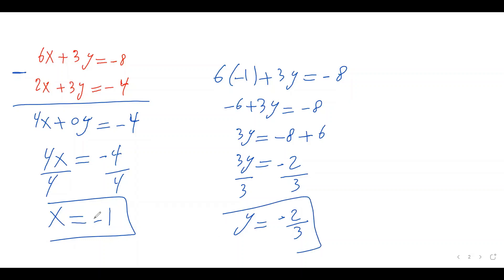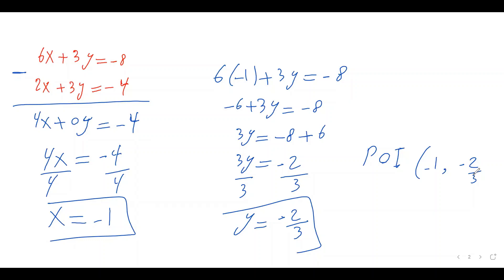So negative 1 is the x-coordinate and negative 2 over 3 is the y-coordinate of the point of intersection. So the point of intersection is negative 1 comma negative 2 over 3. That's how we solve using the elimination method. Let's do another example.